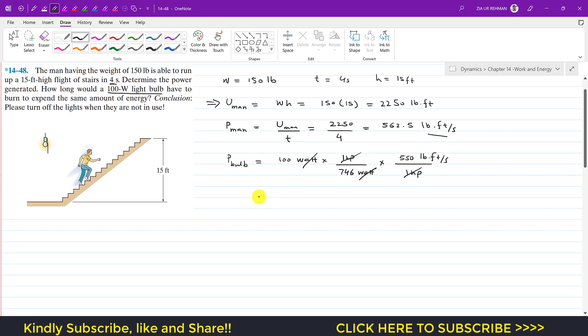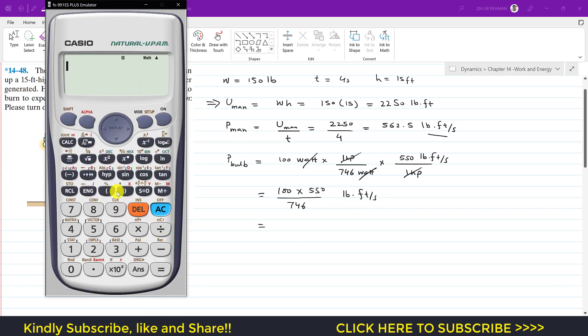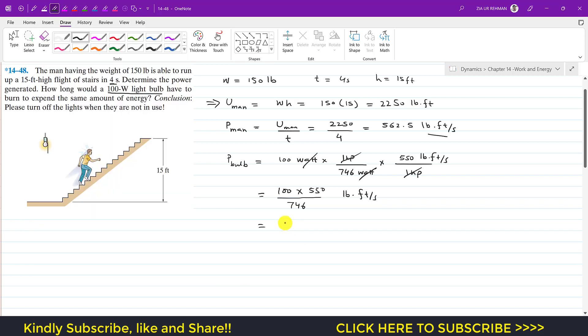So this is 100 into 550 divided by 746 and the units will be pound-feet per second. So this is 100 multiply by 550 divided by 746, this is 73.73 pound-feet per second.